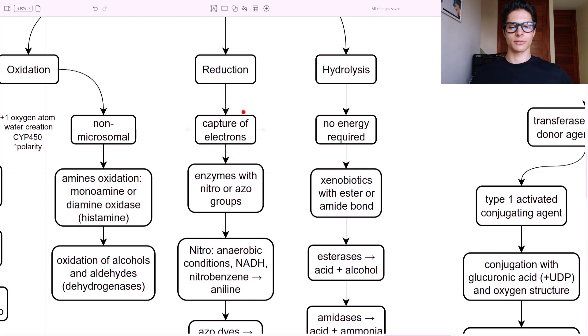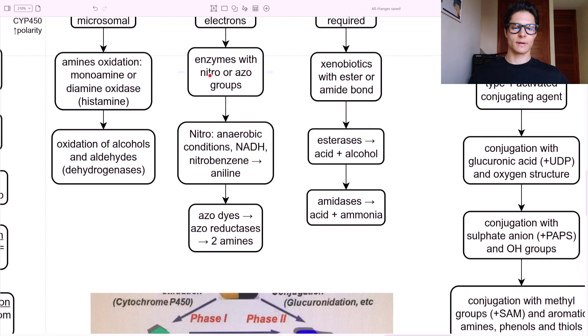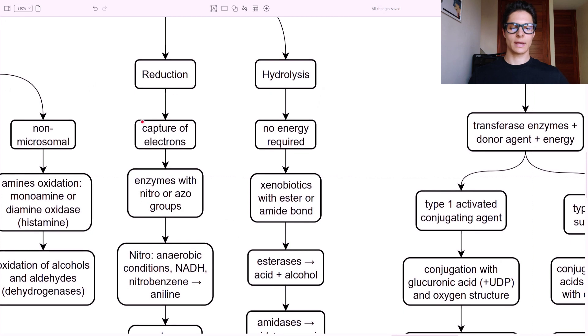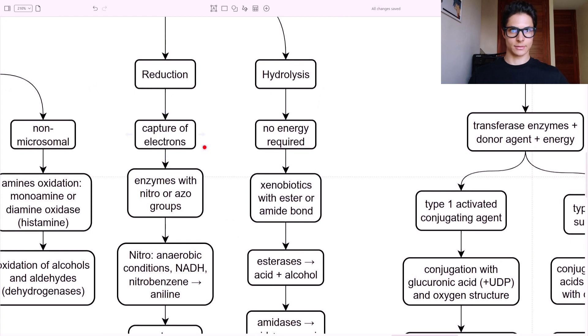And then we have reduction reactions. This is the capture of electrons. We have the enzymes with nitro and azo groups. And the nitro are basically anaerobic conditions - NADH and nitrobenzene that will create an aniline. Whereas azo groups, azodyes, azoreductases that create two amines. So the goal here is to capture electrons.